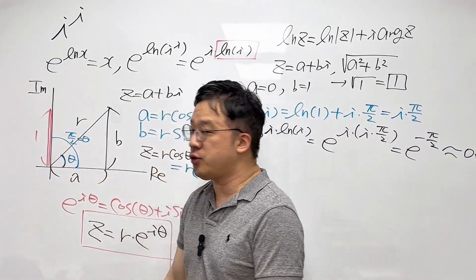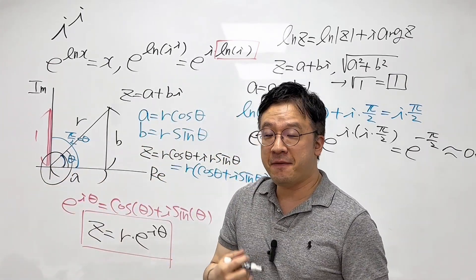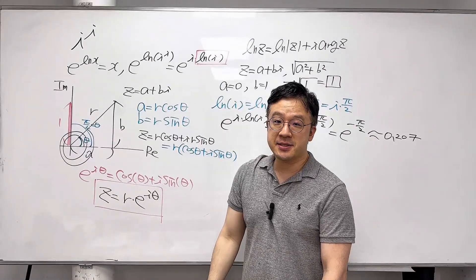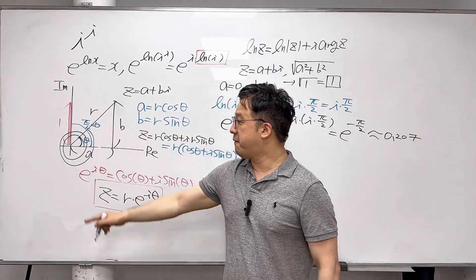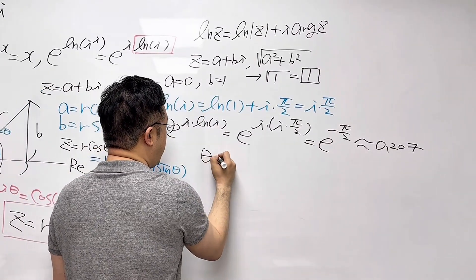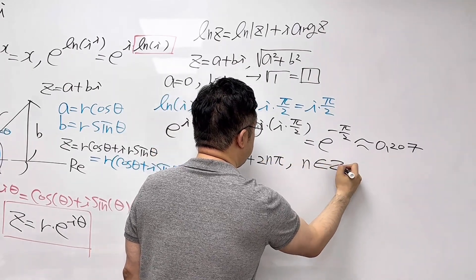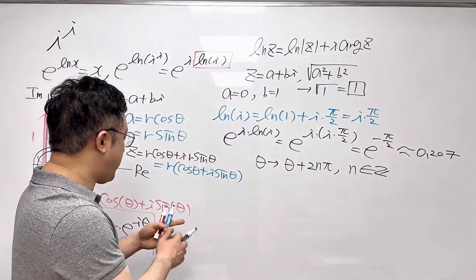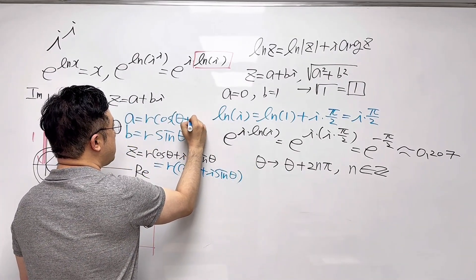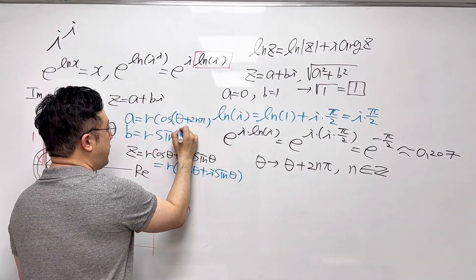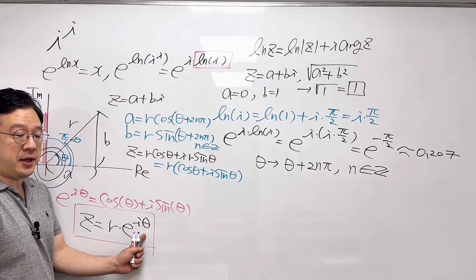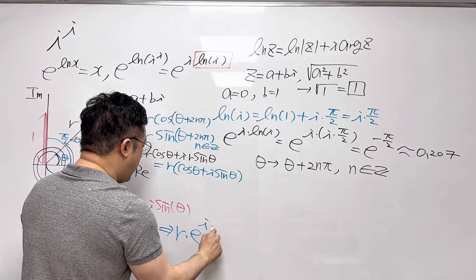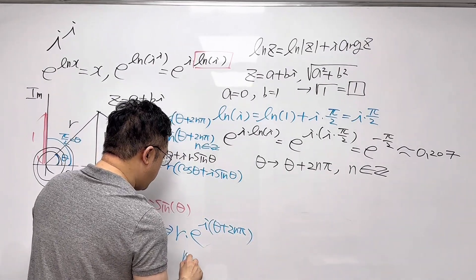Let's talk about the complex plane again. We had the angle θ, and if you add 2π to θ you end up at the same point. If you add 4π to θ, same point again. So adding any multiple of 2π to θ gives the same result — and the same applies when subtracting multiples of 2π. So instead of just θ, we can represent the angle as θ + 2nπ, where n is an integer. Then a equals r·cos(θ + 2nπ) and b equals r·sin(θ + 2nπ). Therefore z equals r·e^(i(θ + 2nπ)), where n is an integer.